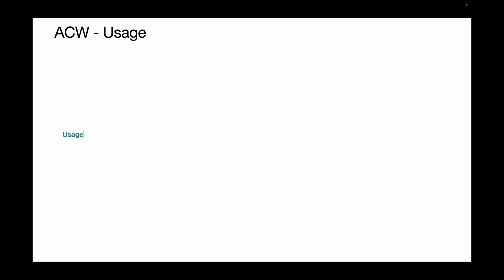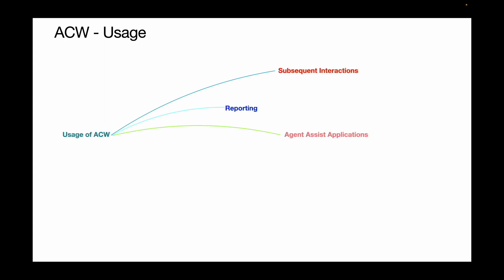So why is ACW important? ACW can be used for subsequent interactions with that caller or for reporting, agent assist applications, data analysis, dashboards, and for agent training. Agent status is set to not ready for the duration of ACW, which means agents cannot take the next call.